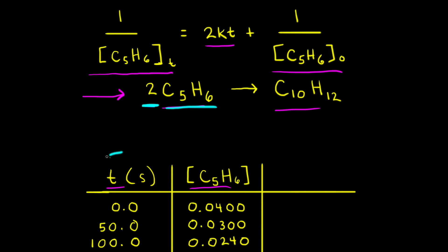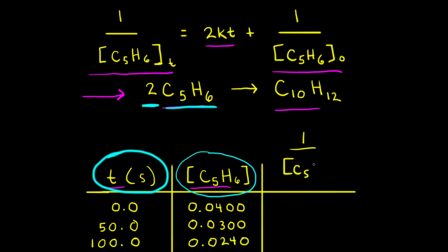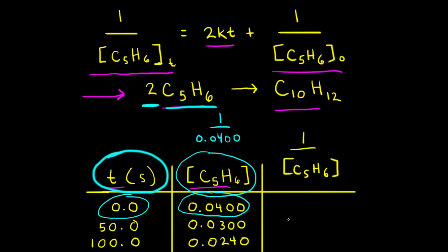Looking at our data table, we have time in seconds and concentration of cyclopentadiene, but we need one over the concentration of cyclopentadiene, so we need a new column. If the concentration of cyclopentadiene when time equals zero seconds is 0.0400 molar, then one divided by 0.0400 gives us 25.0.